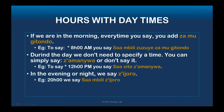The next important thing is how to combine hours with times of the day — morning, afternoon, or evening. There is no difference in how you say the hour itself, but to specify the time of day, you add a word. In the morning, you add 'mu gitondo.' So 'sambiri mu gitondo' means eight o'clock in the morning — that is 8 AM.